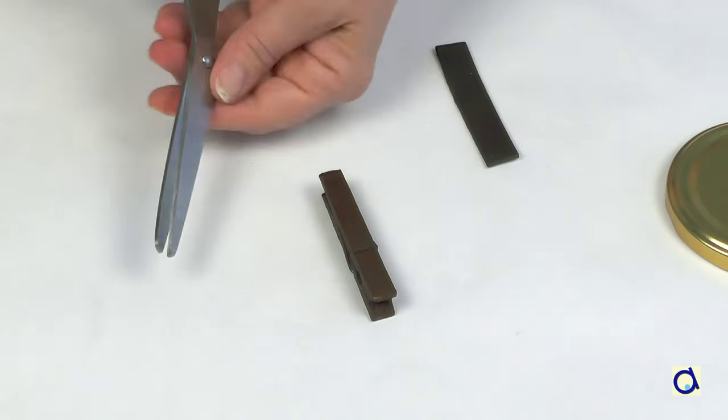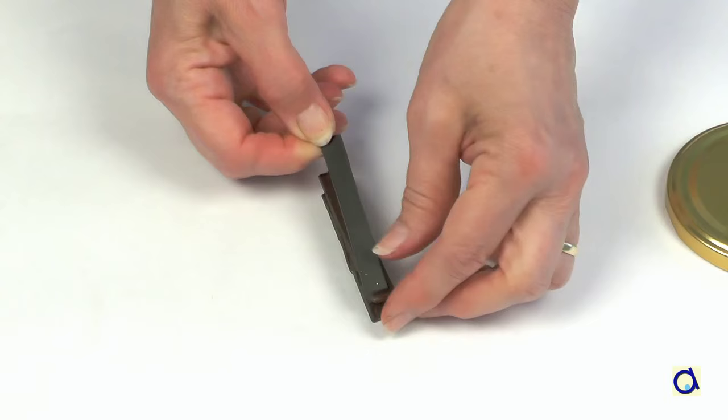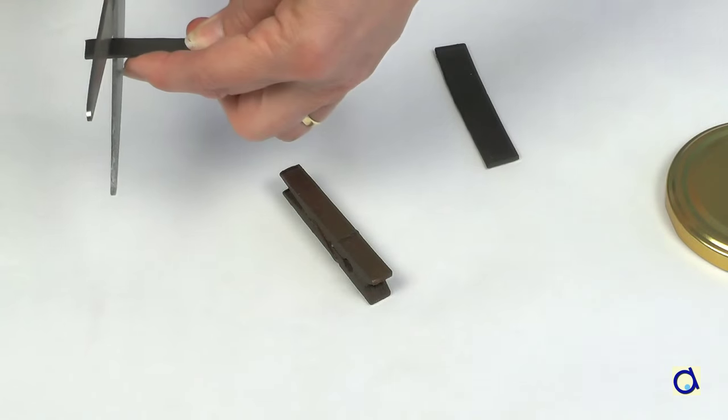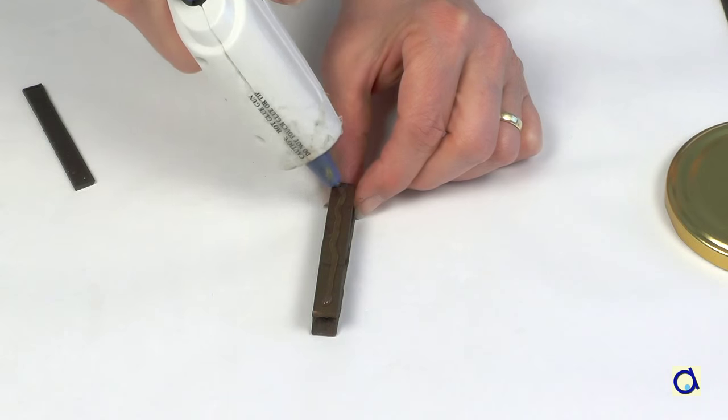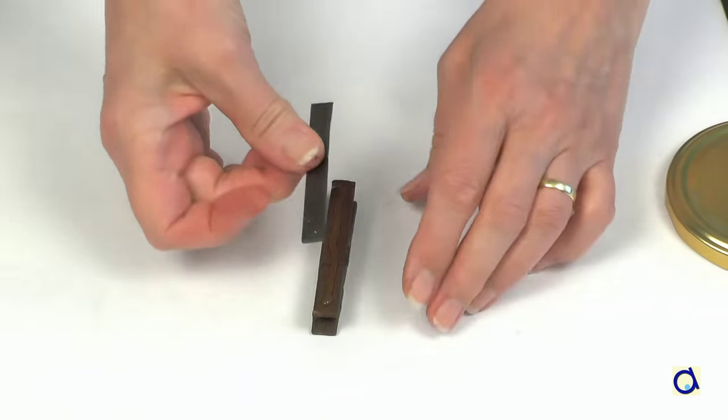Cut a piece of magnetic tape to the same width and length as the clothespin. If the tape is not self-adhesive, glue it on the clothespin with hot glue.